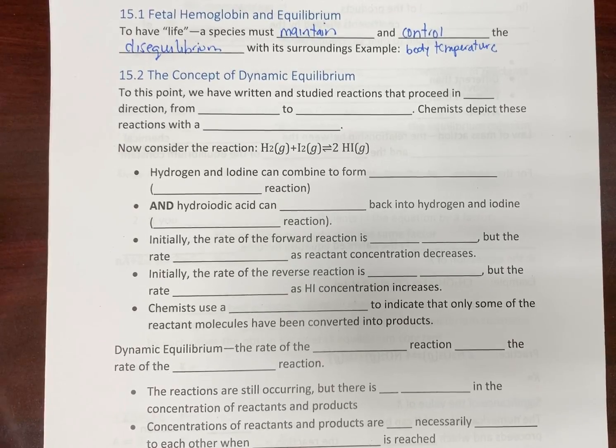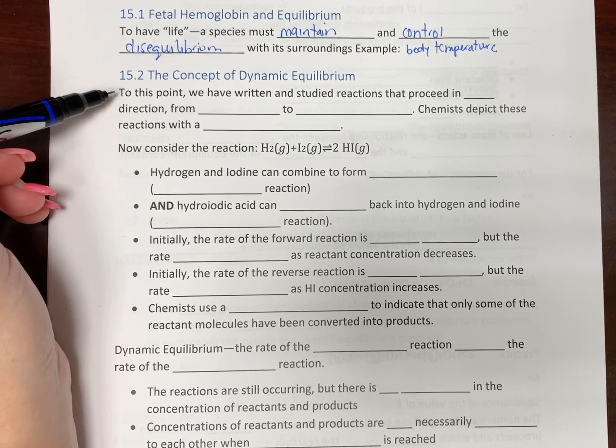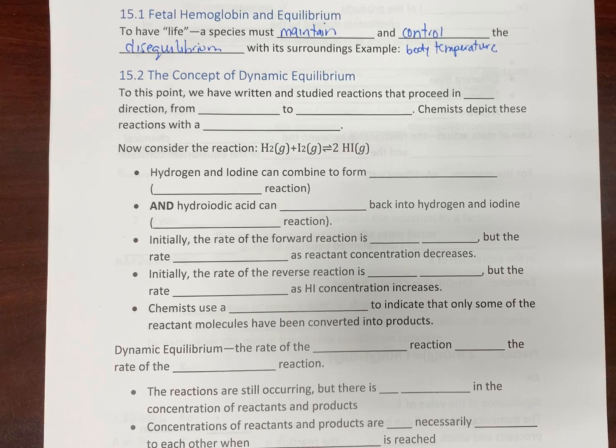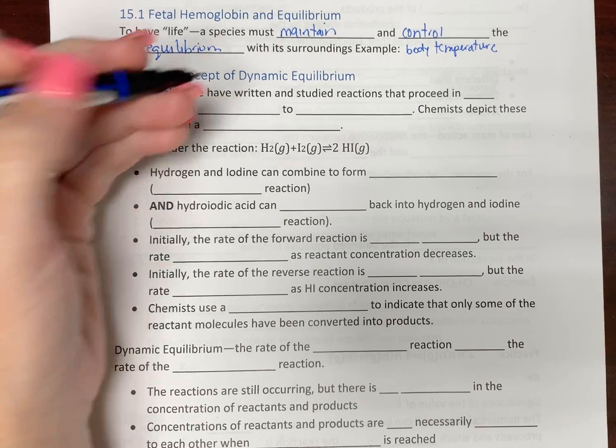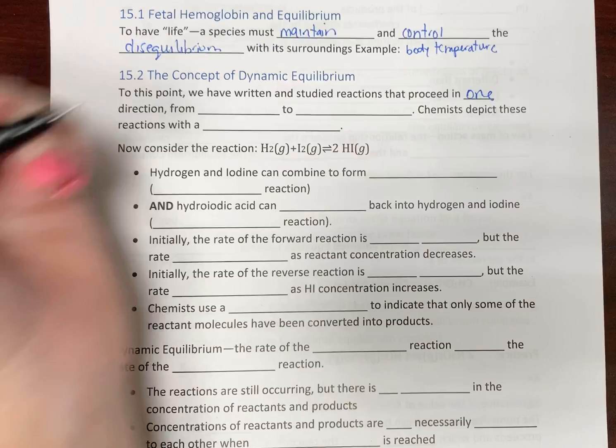What do we mean when we say equilibrium and dynamic equilibrium? Let's back up a little bit. Everything we've done to this point, both in first semester general chemistry and up to now in second semester, we've been writing and studying reactions that only proceed in one direction, and that would be the forward direction going from reactants to products.